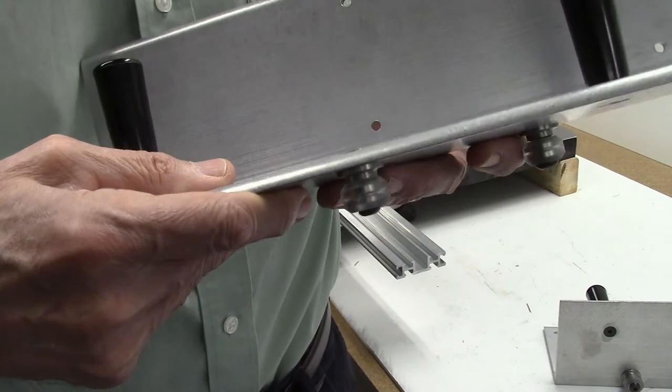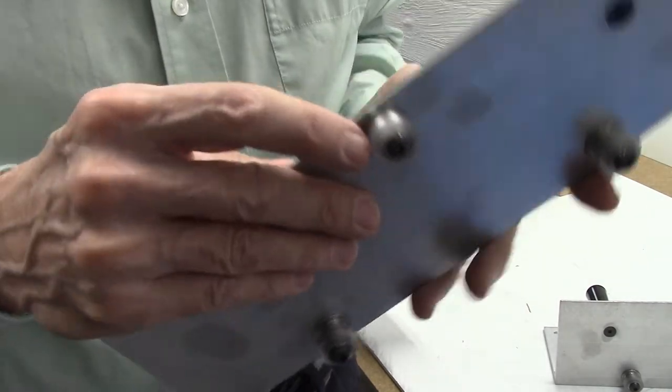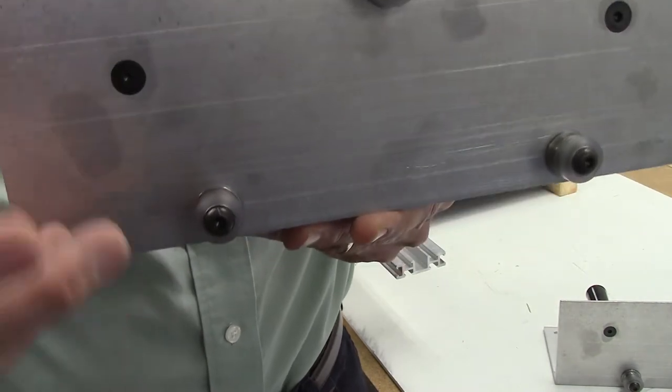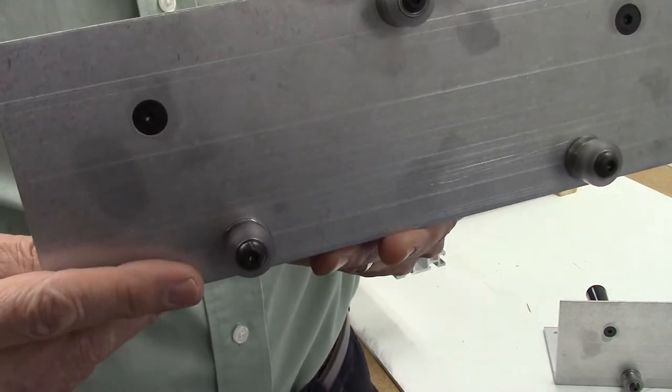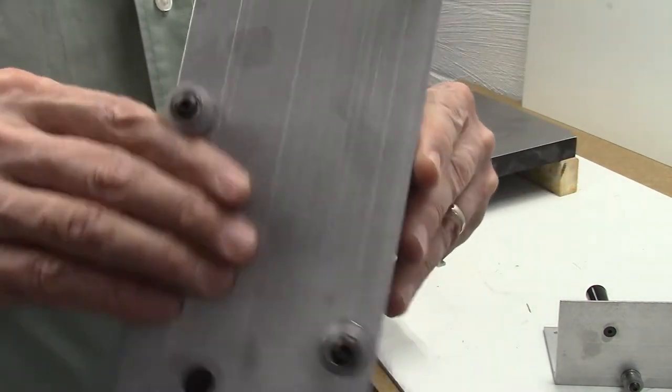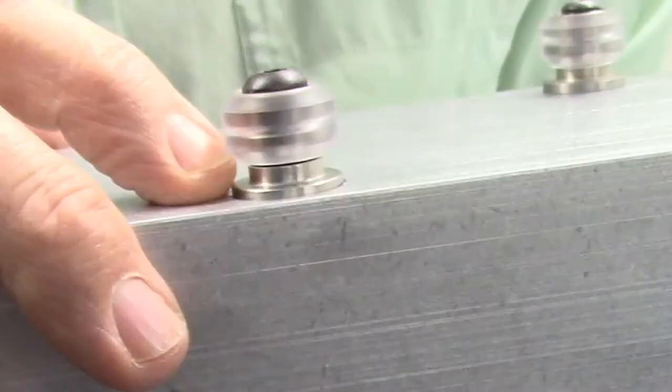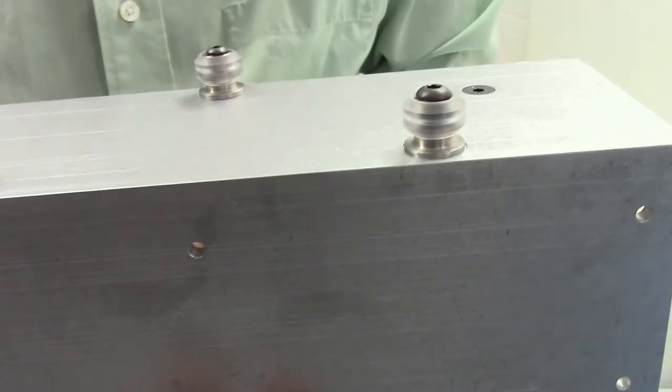One other thing to note is there is a correct orientation of these roller bearings. If you were to replace these bearings, they do have an upside down and right side up position. You'll notice that if you look at these bearings, and these two in particular, you see there's a small gap at the bottom of the bearing sleeve. This should be the same on both of the bearings.